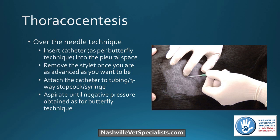For the over-the-needle technique, the same principles apply when inserting the needle into the chest cavity — bevel up, cranial to the rib. Once in the pleural space, remove the stylet and advance the catheter off the stylet, just like placing an IV catheter. I prefer this because it's less traumatic if the lung contacts the catheter tip rather than a needle. Once the stylet is removed, attach the catheter to the tubing, three-way stopcock, and syringe, then aspirate as before.